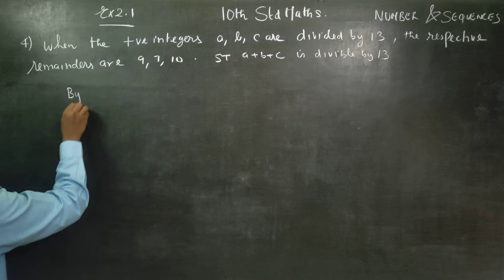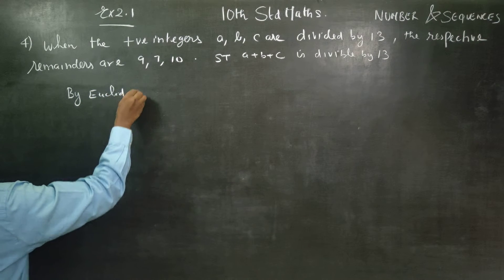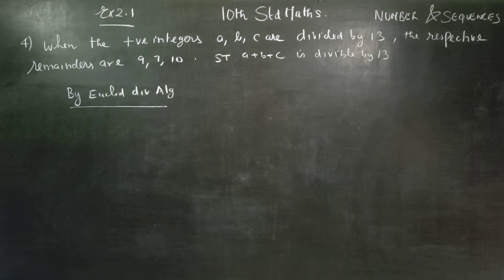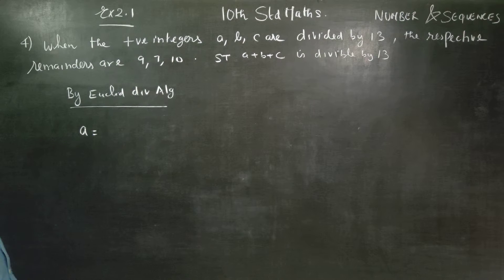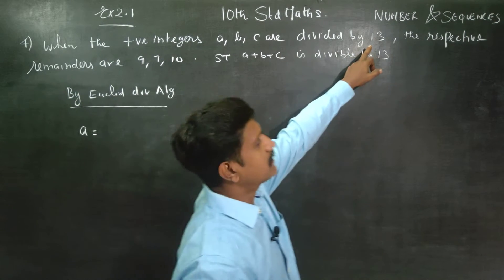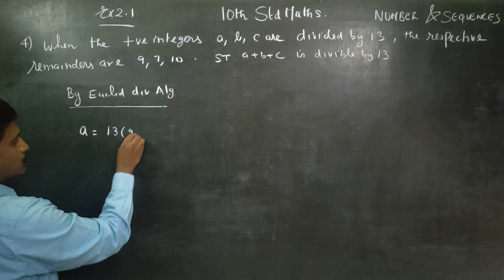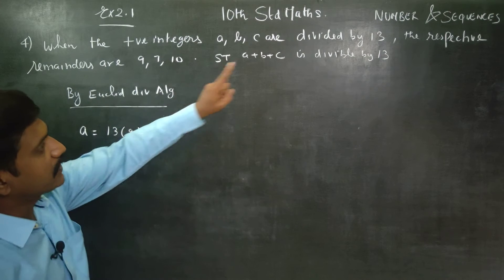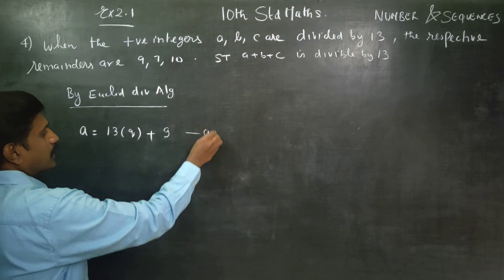By Euclid Division Algorithm, when we divide A by 13, A is equal to 13 into quotient plus remainder. The remainder is 9. This is equation number 1.